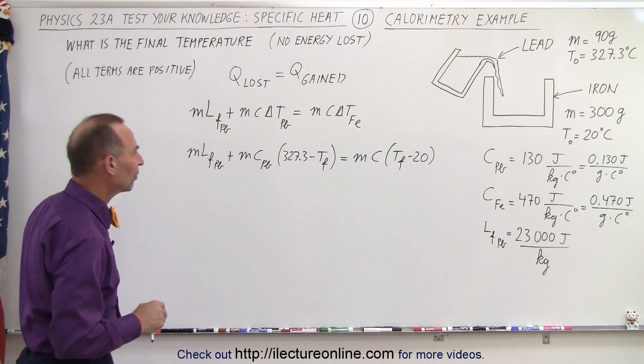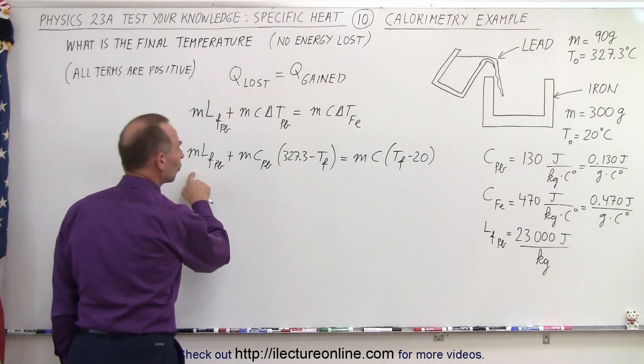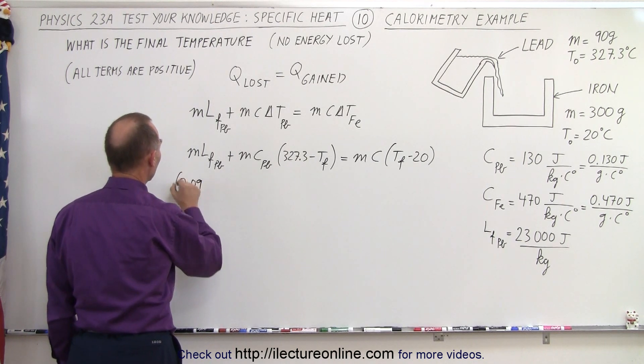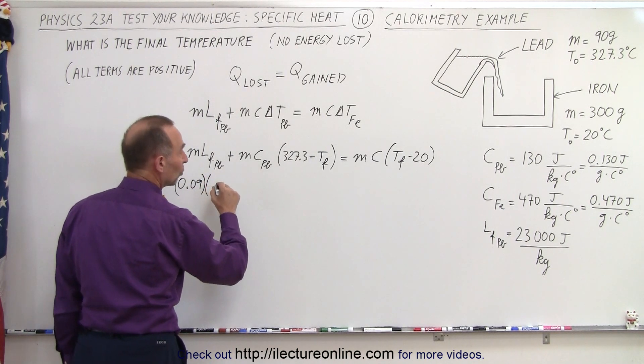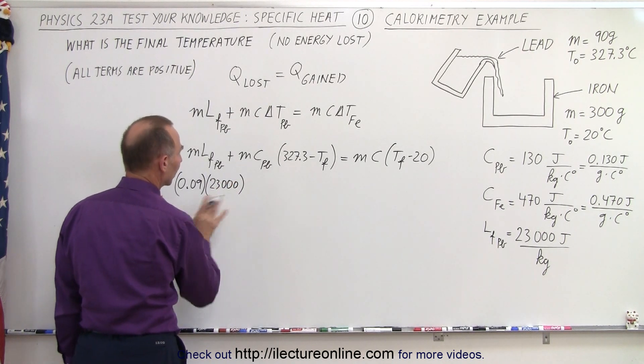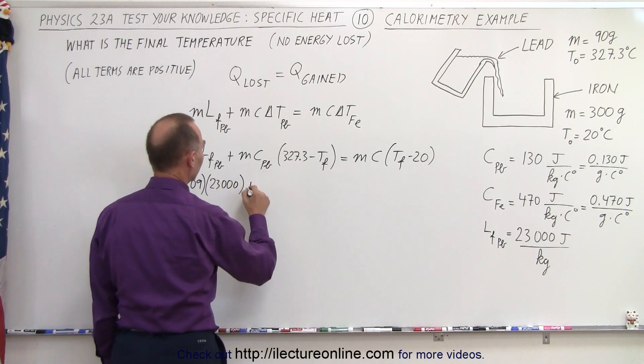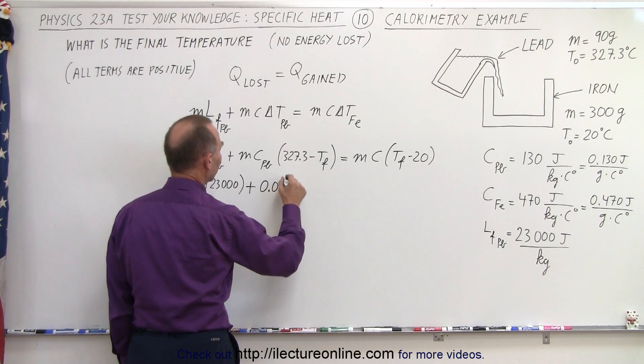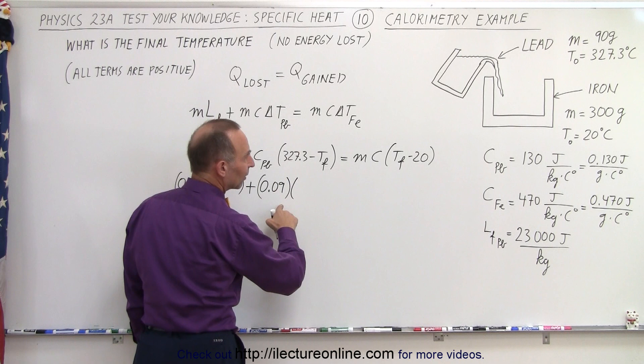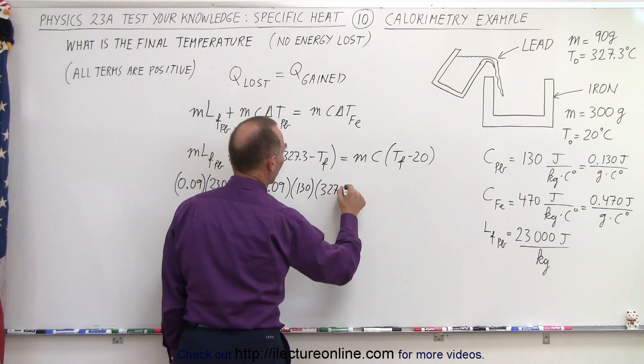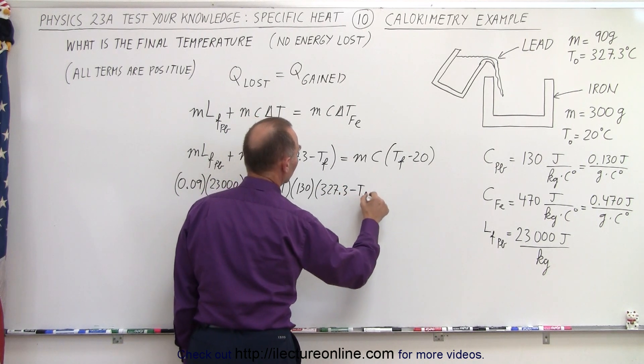Let's plug in the rest of the information that we have. So the mass of the lead is going to be 0.09 in kilograms, times the latent heat of fusion, which is 23,000. I'll leave off the units to make the equation a lot cleaner. Plus the mass of the lead, which is again 0.09, times the specific heat of the lead, which is 130, times 327.3 minus the final temperature.